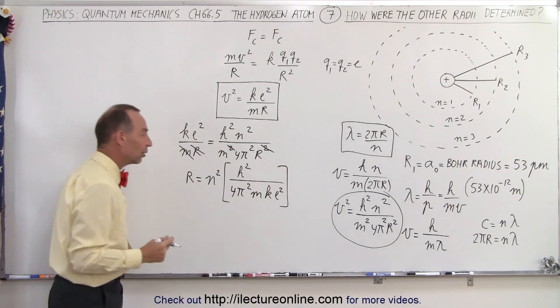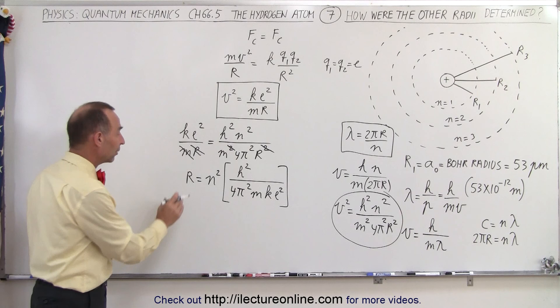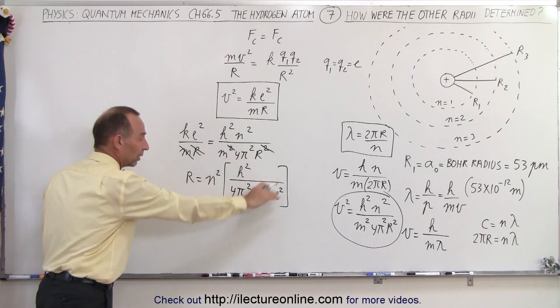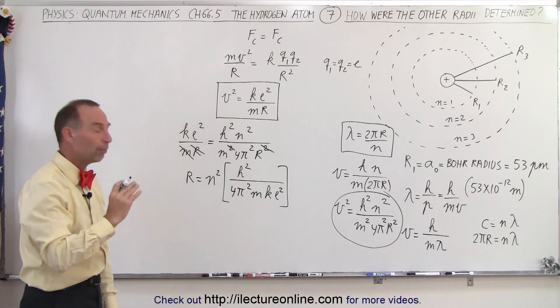So now you see that the only difference from what we saw in the previous video is that now the radius is going to be n squared times this quantity right here, which was the Bohr radius.